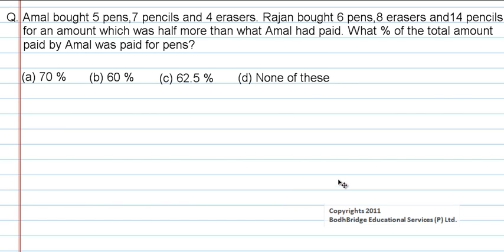Now let us work out a problem. Amal bought 5 pens, 7 pencils and 4 erasers. Rajan bought 6 pens, 8 erasers and 14 pencils for an amount which was half more than what Amal had paid. What percent of the total amount paid by Amal was paid for pens? The options are 70%, 60%, 62.5%, or none of these.